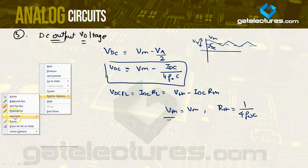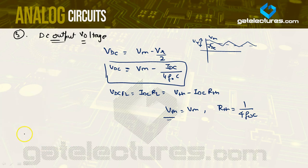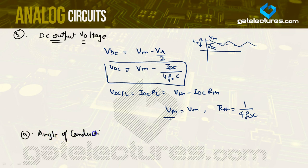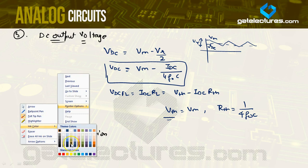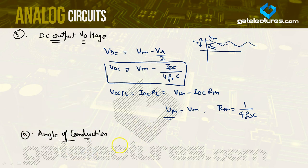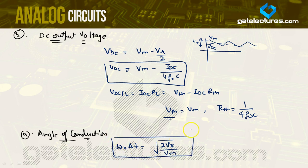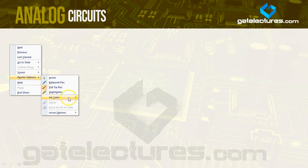The fourth point to discuss is the angle of conduction of a diode. To derive it, if you solve, the angle of conduction omega₀·Δt comes out to be the square root of 2Vr by Vm. The derivation is the same as for the half wave rectifier, so it is not re-derived here. The fifth point regarding the full wave rectifier is average diode current.